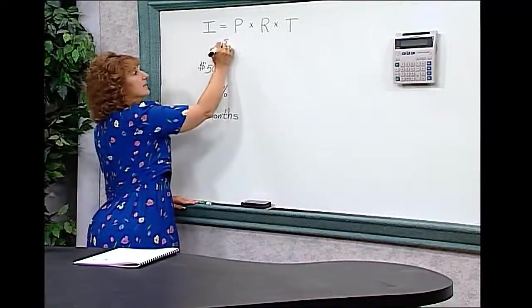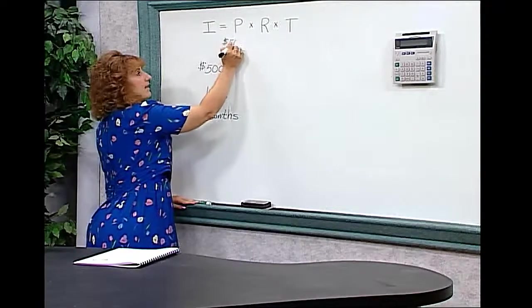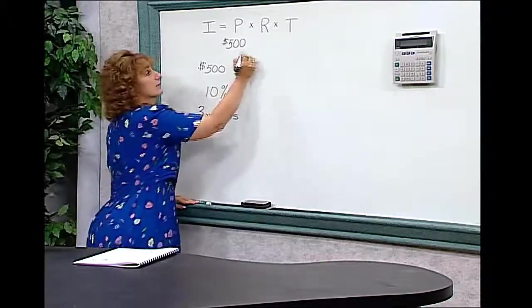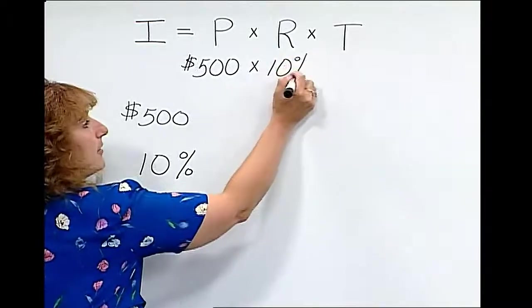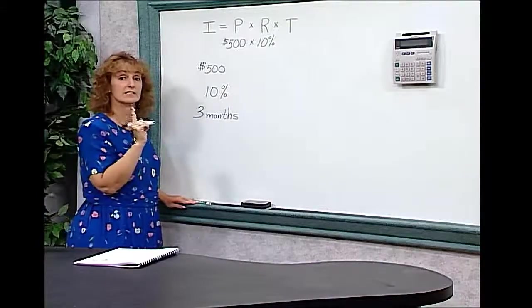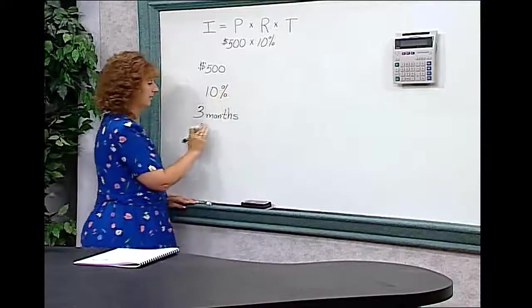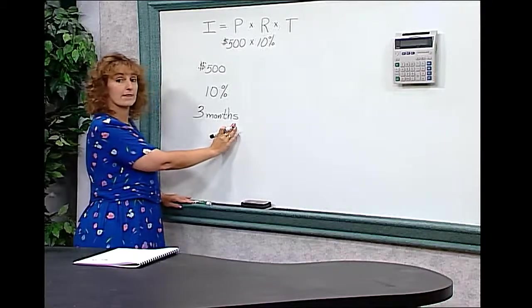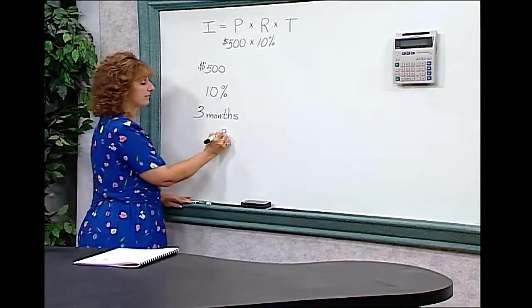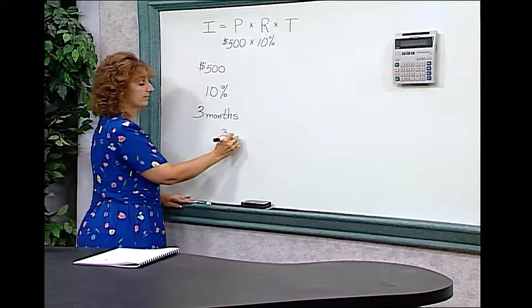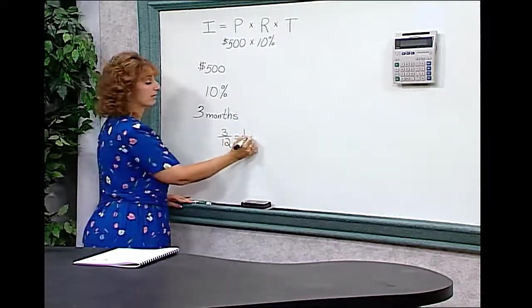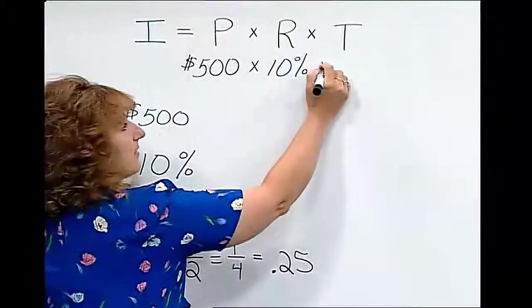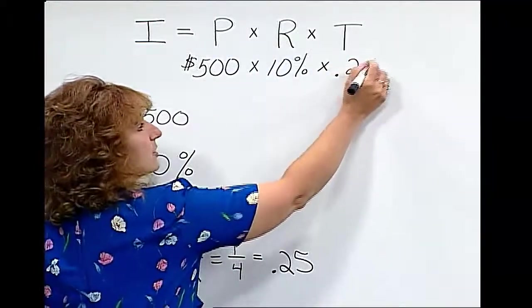Our principal in this case is $500. That's how much money we're putting into the bank. They're going to pay us 10% for leaving that money there. But remember, it's annual interest, which means yearly, which means our time of 3 months must be changed to years. Remembering that there are 12 months in a year, we have to do 3 divided by 12, which simplifies to 1 fourth, which we know is .25. So 3 months is .25 of a year.